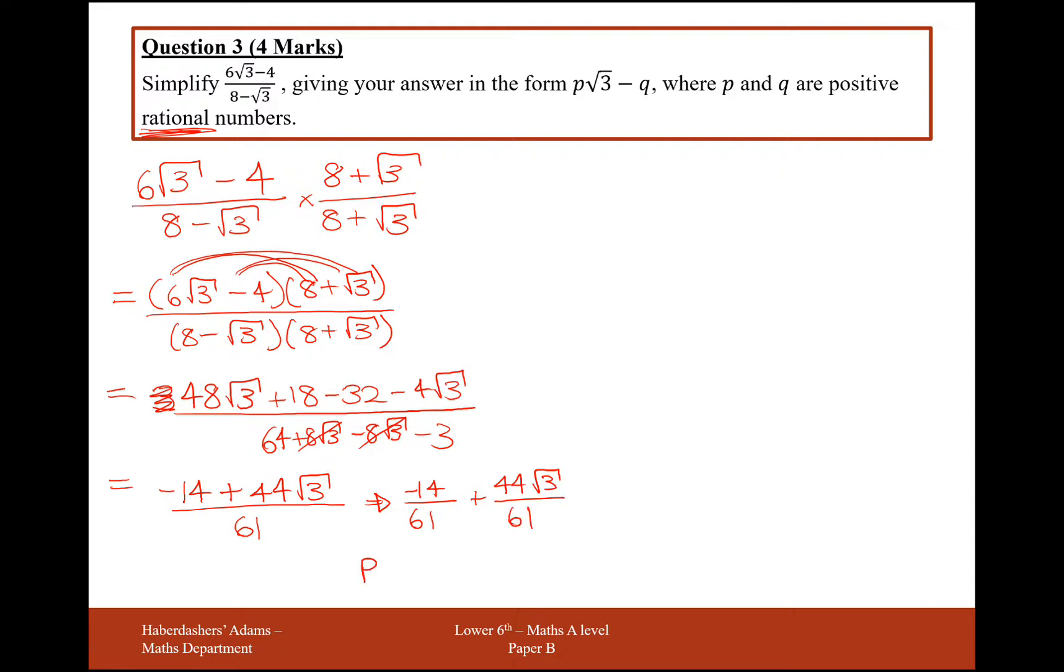So P here is the thing that's multiplied by root 3, so that's 44 over 61. And Q here is the thing that we're subtracting, so that's just going to be 14 over 61, because it's already got a negative in front of it.